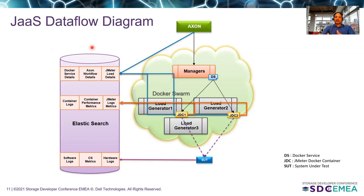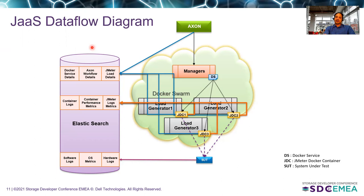If two Docker containers are running but the load is not enough on the system, we can increase it. This solution has dynamic scale-up and scale-down features, allowing users to increase load by increasing the number of users. A user can go back to the Docker service and increase the number of containers from two to three. The new container comes up in a load-distributed manner on a new load generator, retrieves all information from the database, starts the JMeter script, and begins sending data and pumping stress on the server. This way, we can scale up or scale down the load based on user requirements.